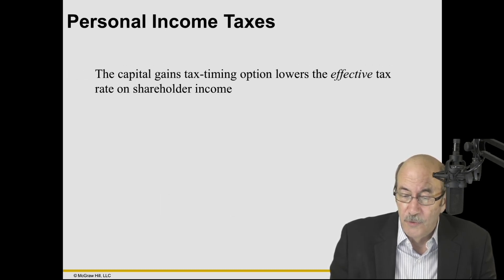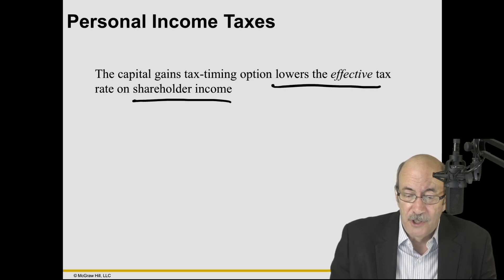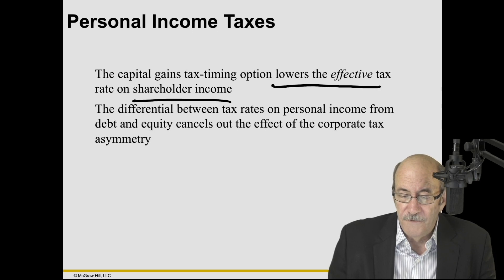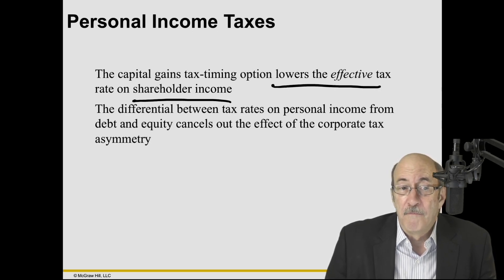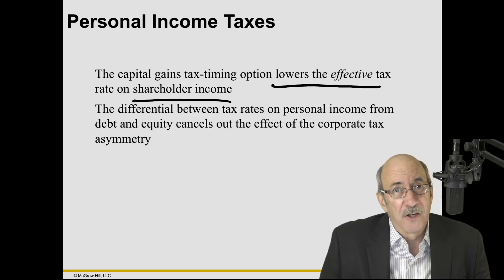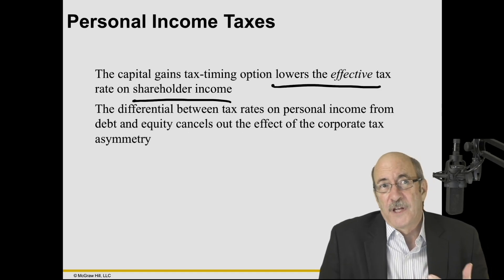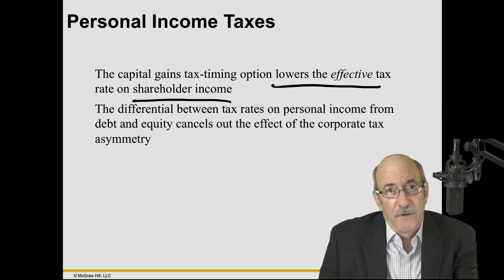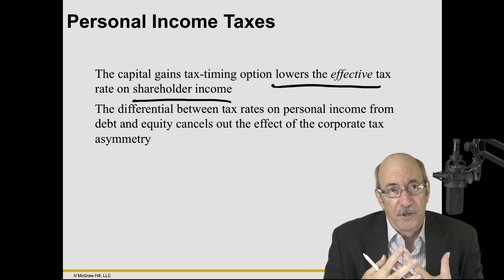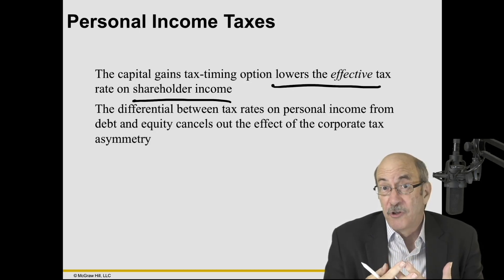This lowers the effective tax on shareholder income. The differential between the tax rates on personal income from debt and equity may, in the right circumstances, cancel out the effect of corporate tax asymmetry. We have tax advantage on the personal level for equity, and tax advantage on the corporate level for debt — at certain levels of these tax rates, they might cancel each other out.